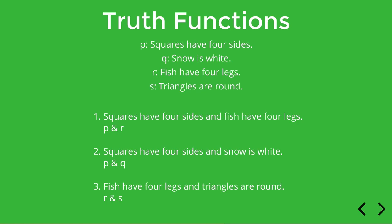Okay, what about the second case? 'Squares have four sides and snow is white.' Is that true or false? Well, it seems perfectly true, as long as we ignore the fact that snow isn't always white because it might be dirty. Each individual sentence, P and Q in this case, is individually true, and so the conjunction of them together is also true.